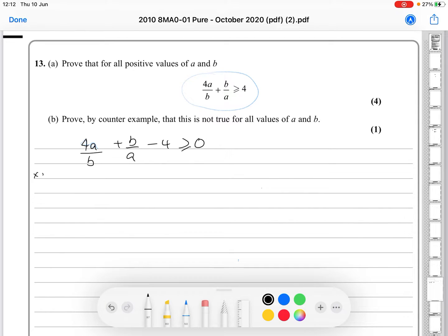So, we're going to multiply through by a, b together to do it all in one go. So, we've got 4a times a, b is 4a squared, b over b, cancel.